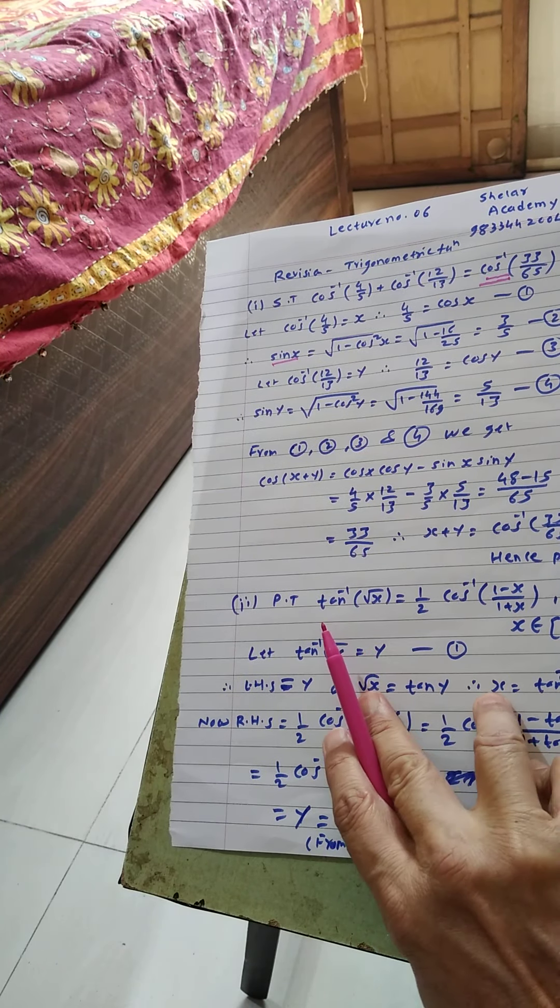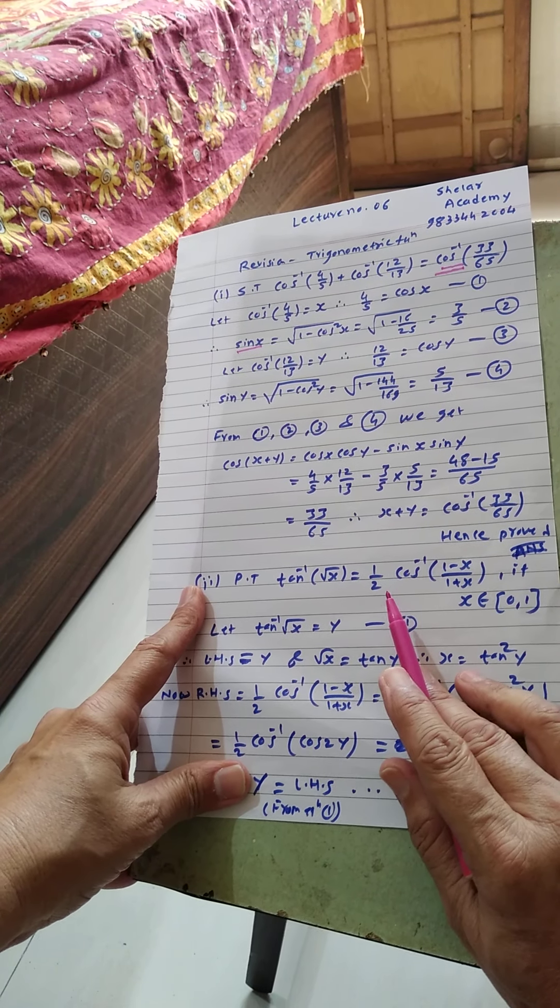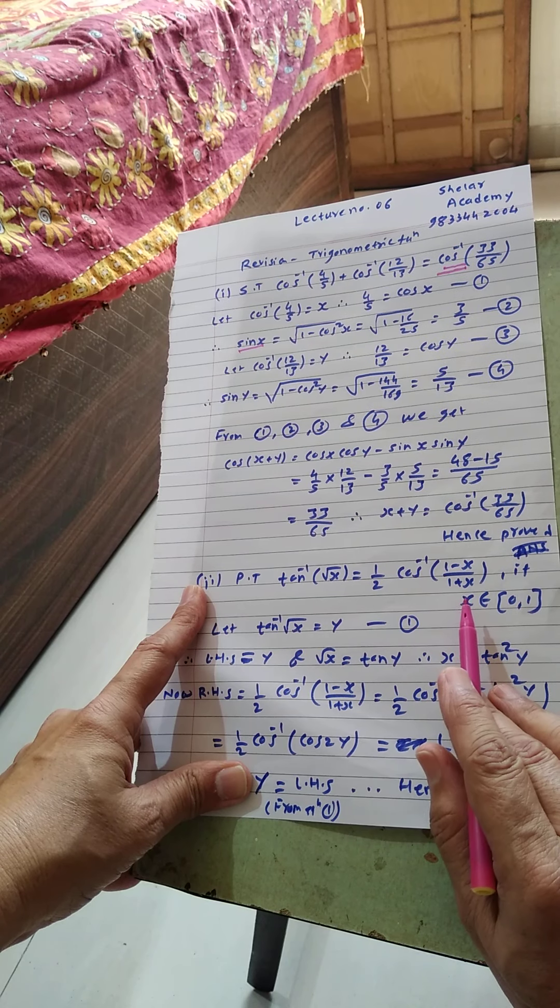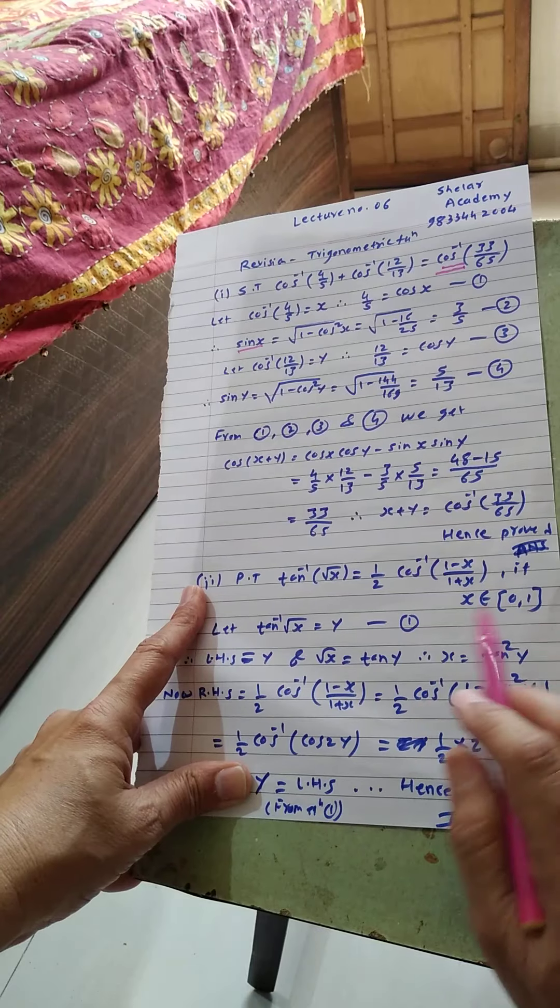Second question: prove that tan inverse of root x is equal to 1 by 2 cos inverse of 1 minus x upon 1 plus x, if x belongs to 0 comma 1, or x is between 0 and 1.